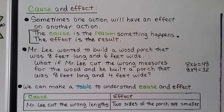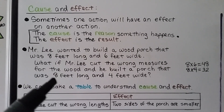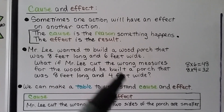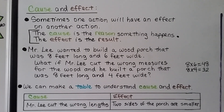Now let's talk about cause and effect. Sometimes one action will have an effect on another. The cause is the reason something happens; the effect is the result. Mr. Lee wanted to build a wood porch that was 8 feet long and 6 feet wide. But he cut the wrong measures and built a porch that was 8 feet long and only 4 feet wide. The cause was cutting the wrong lengths, and the effect is that two sides of the porch are smaller than planned.